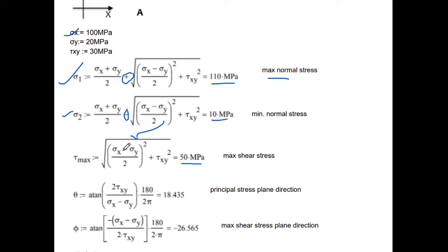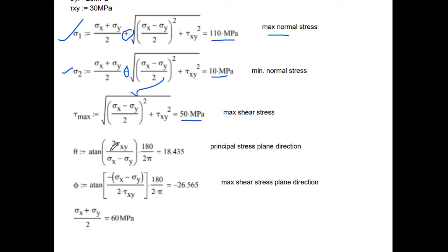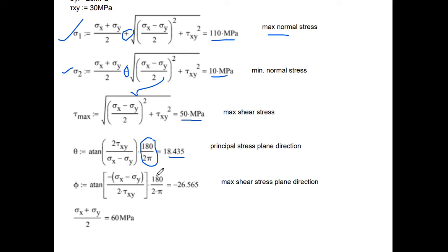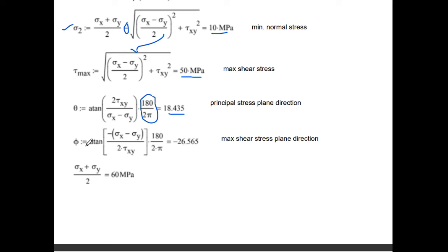Now for θ — the principal stress plane direction — θ equals tan⁻¹(2τxy / (σx − σy)) multiplied by 180/2π to convert to degrees. Putting in τxy = 30 and σx − σy = 80, we get θ = 18.435°. For φ, the maximum shear stress plane direction, the formula is tan⁻¹(−(σx − σy) / 2τxy) × 180/2π, giving φ = −26.565°. This completes the analytical method.